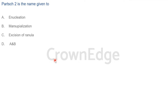Partsch 1 is an ancient procedure from around 1895. Partsch 1 involves initial decompression followed by marsupialization. In decompression, you remove the overlying epithelium and bone — de-roofing the cyst — so the cystic contents are expelled. Partsch 2 is enucleation with primary closure of the cystic wall. Let me explain the difference between decompression, marsupialization, and enucleation.